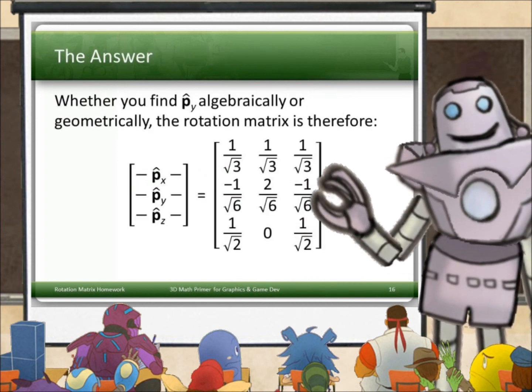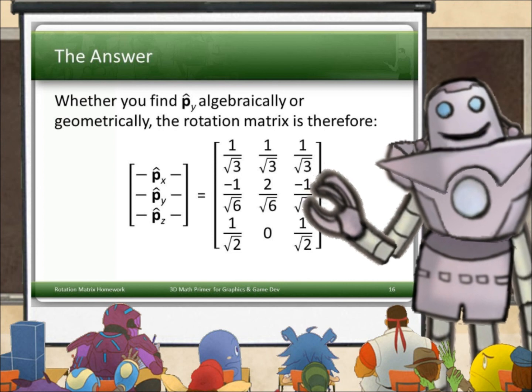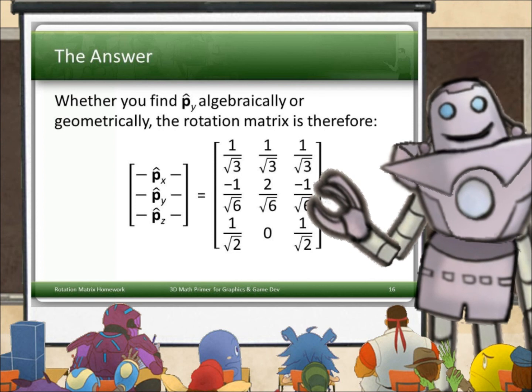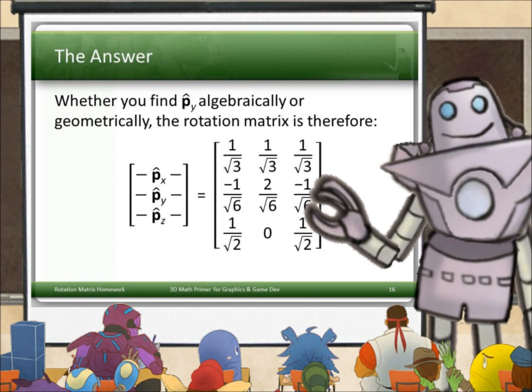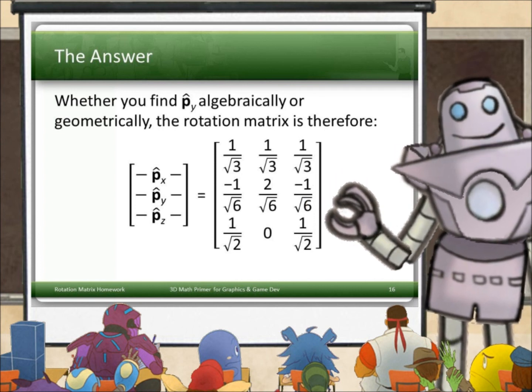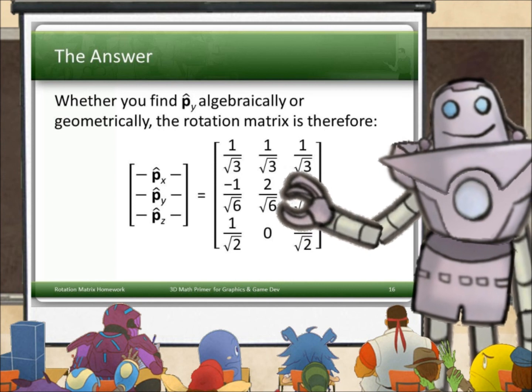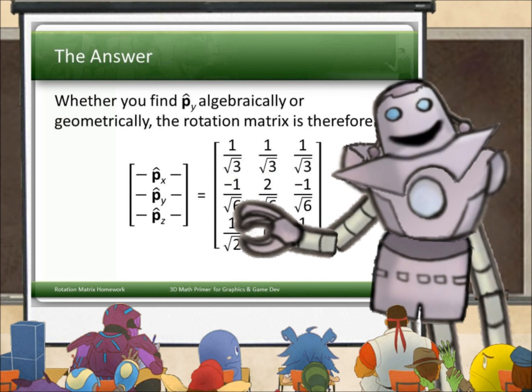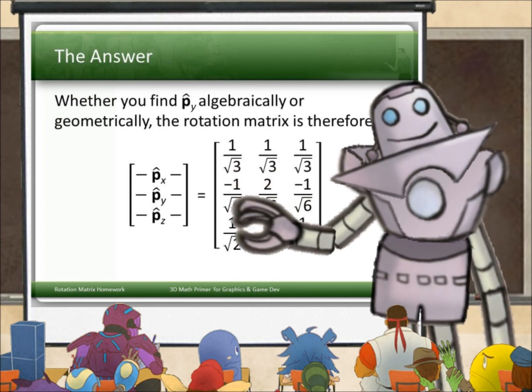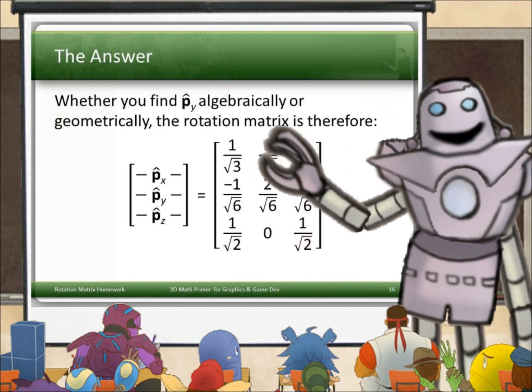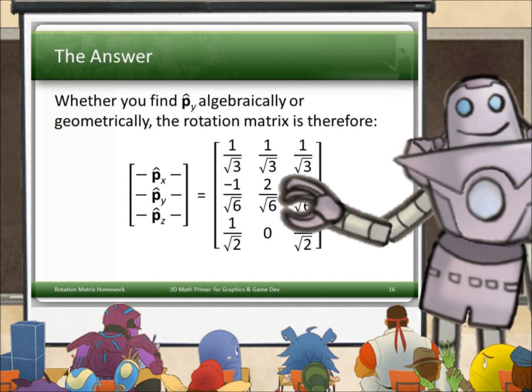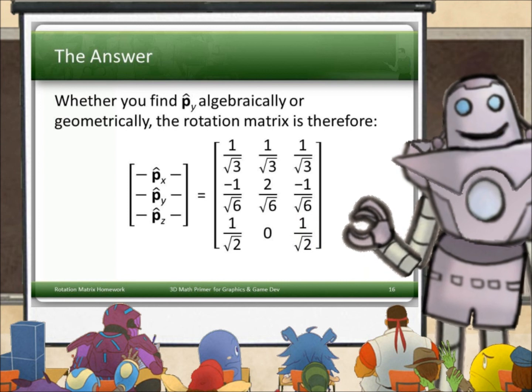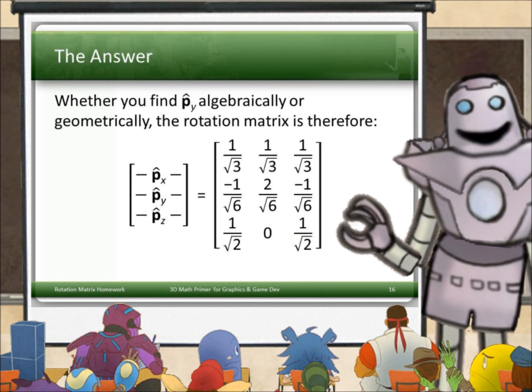Whichever way you got p_y hat and, oh, there are other ways too, like take the cross product. But that's kind of like killing a fly with a howitzer. We take p_x hat, p_y hat, p_z hat, use them as the rows of a matrix. Remember, this is the notation we're using. And we get this matrix. So first row is p_x hat, second row is p_y hat, third row is p_z hat. And that is the rotation matrix we were looking for.